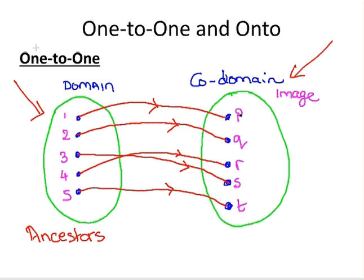So the ancestor of p is one, and the image of one is p. These elements in the co-domain are described as the images of elements in the domain. Now we can see that each element of the domain has only one ancestor — that is the idea of a one-to-one function: one ancestor per element in the co-domain.